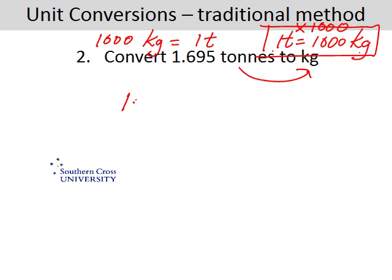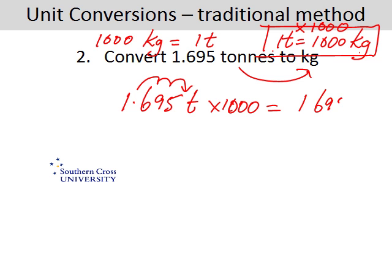So 1.695 tonnes times by 1,000 — when you're multiplying by 1,000 you move the decimal point three places to make the number bigger — equals 1,695 kilograms. So in other words, 1.695 tonnes is equal to 1,695 kilograms.